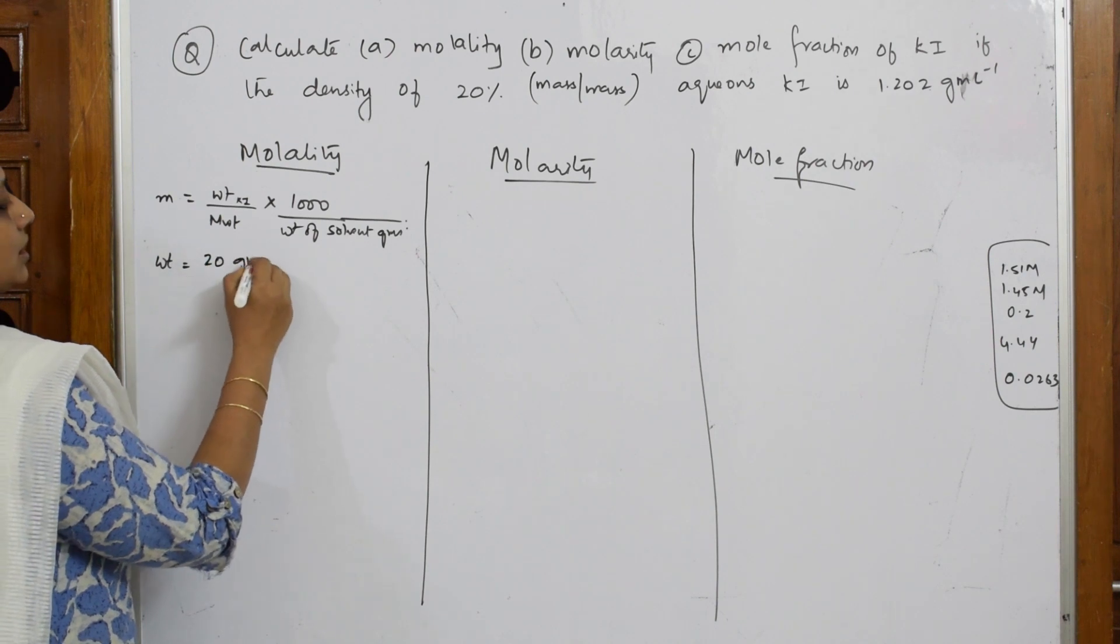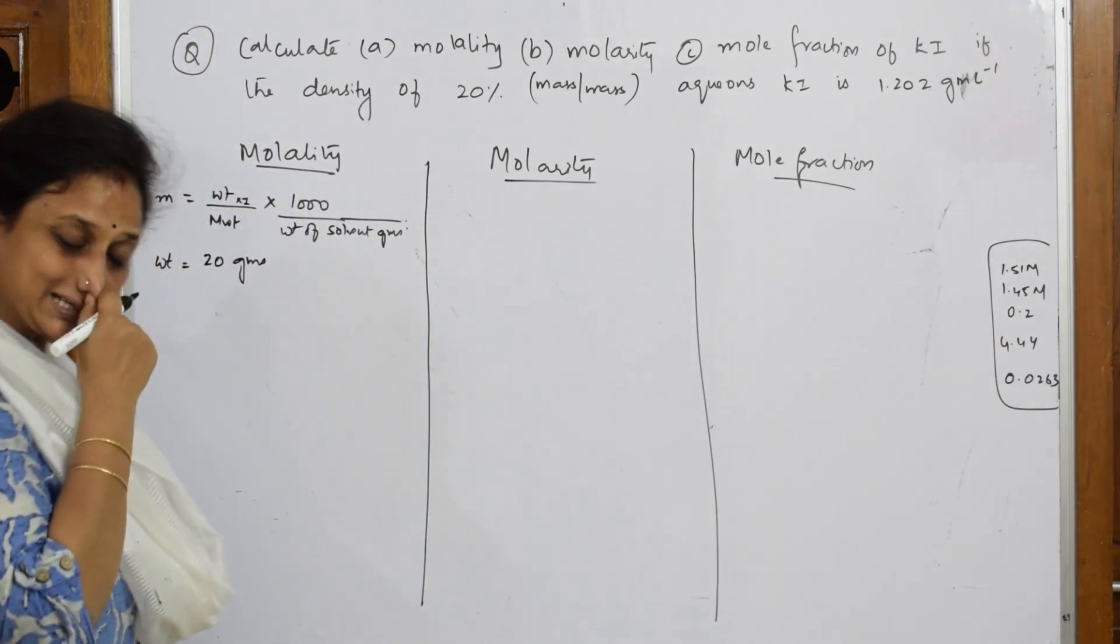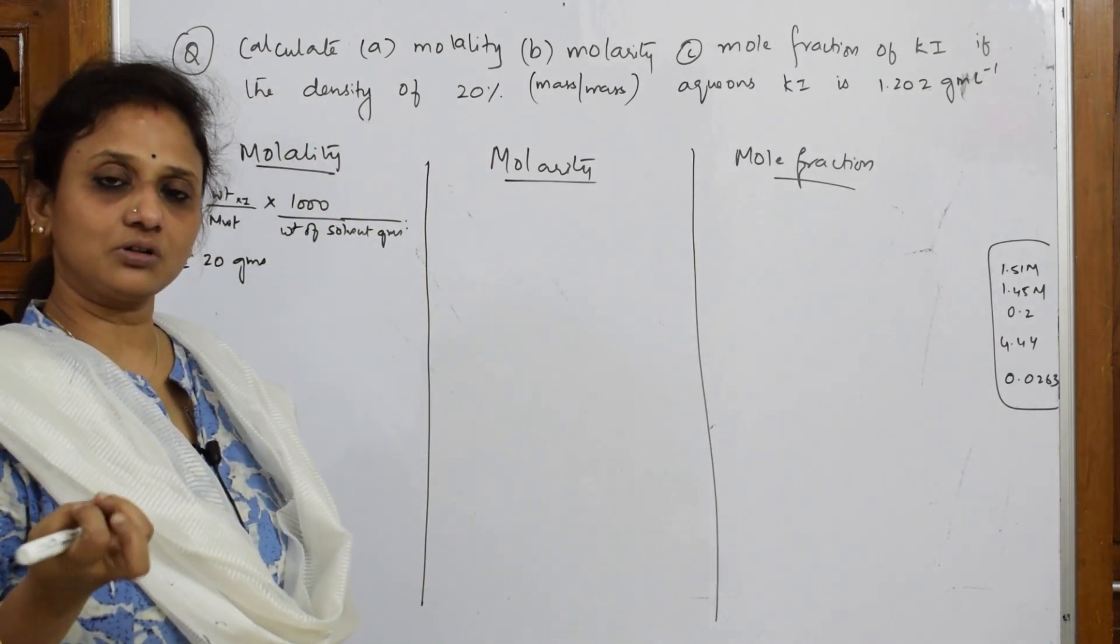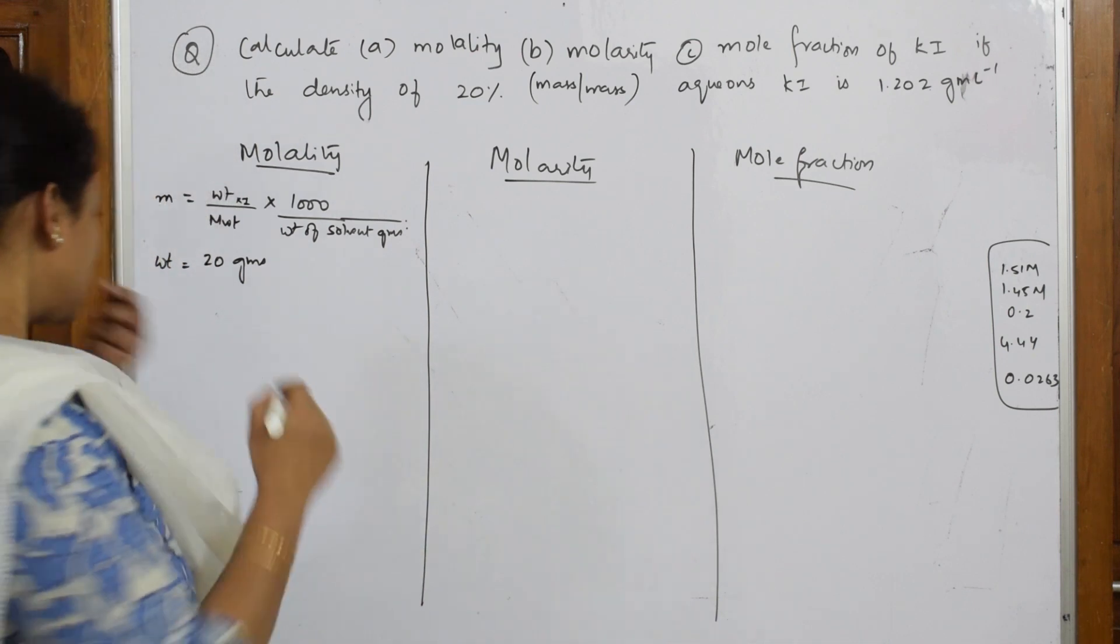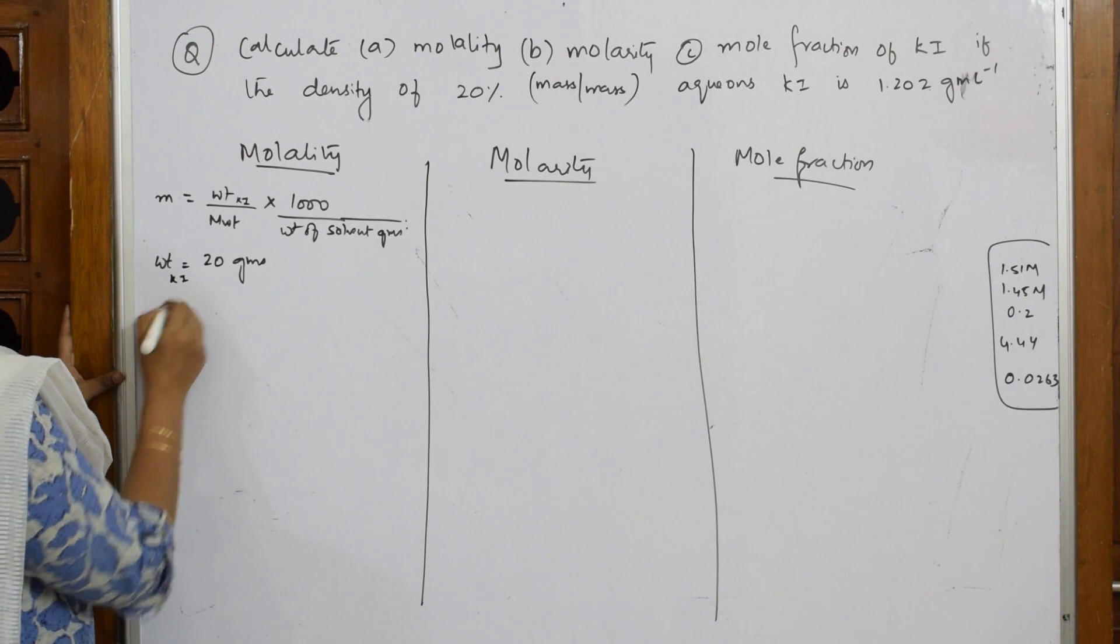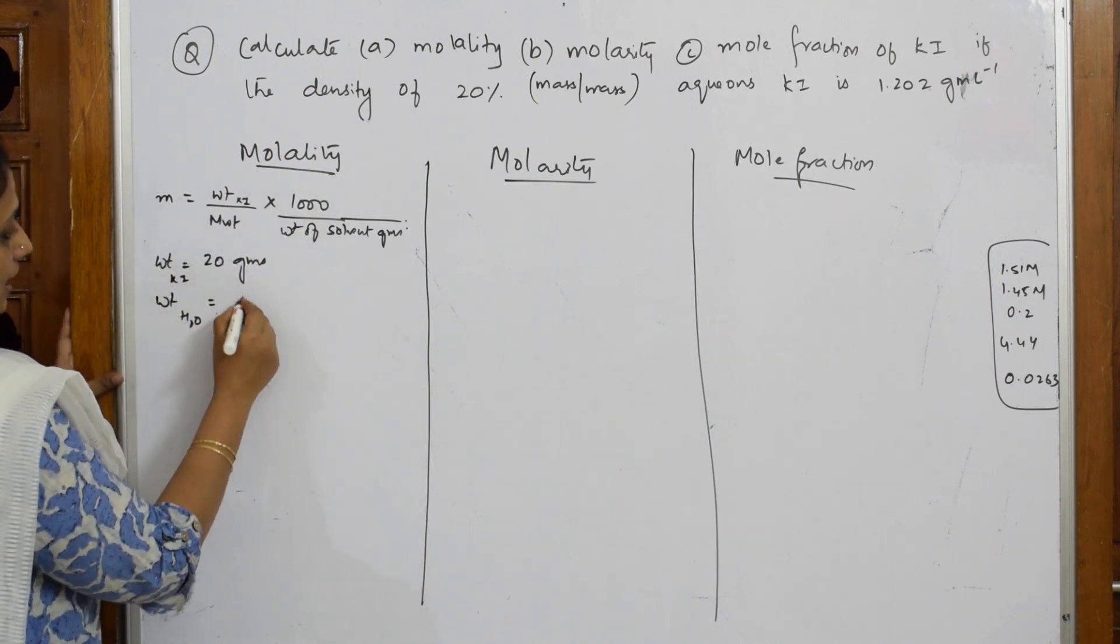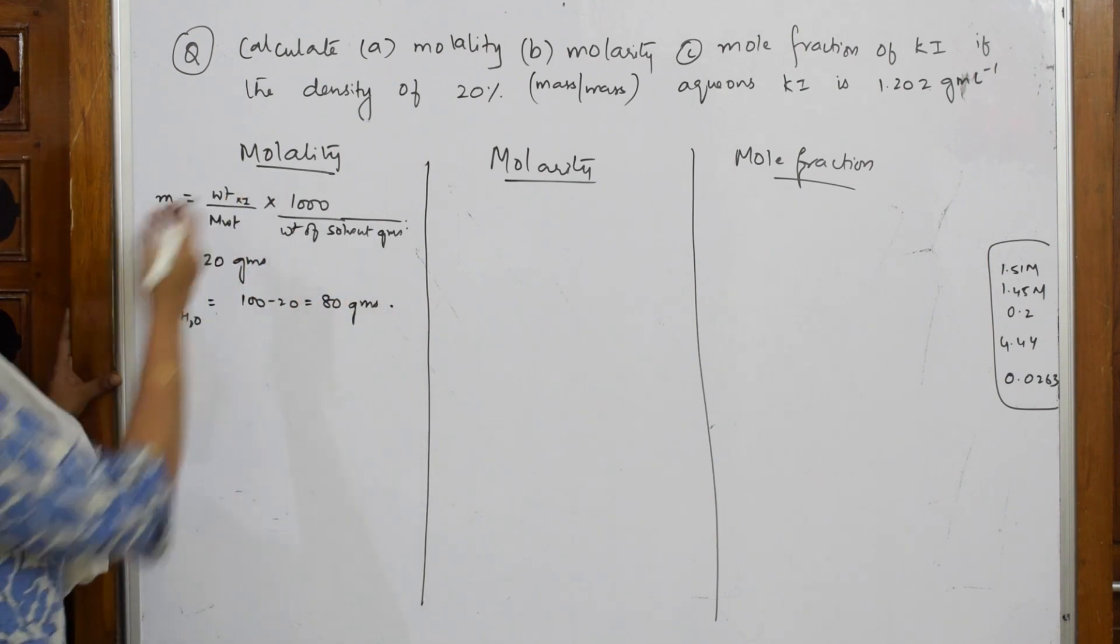In aqueous, 20% aqueous potassium iodide, that means potassium iodide is dissolved in water. The solute and the solvent together makes a solution. Here, I have to consider weight of water also, that is your solvent. That is 100 minus 20, that is 80 grams. Now, I'm ready with the data.